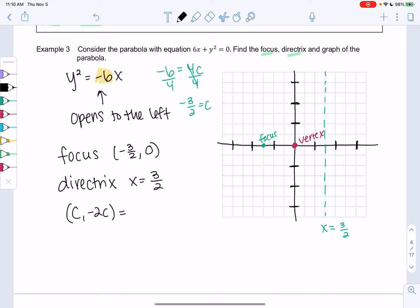So let's find c and -2c. So that'll be -3/2 and then -2 times -3/2. Which gives me -3/2 and 3. And then my other point is just c and then positive 2c. So it'll be -3/2 and then -3 because it's the opposite sign.